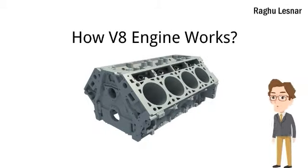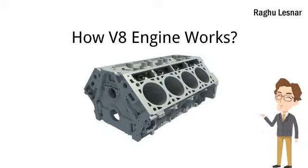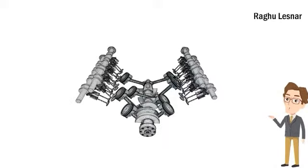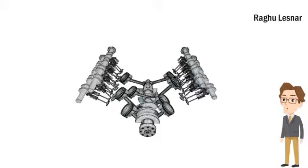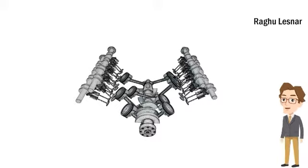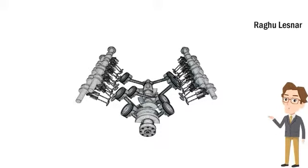Hey, hello friends, welcome to my channel. Now let's see about V8 engines. V8 engines basically have eight cylinders in a V configuration that are mounted on a single crankcase. Obviously, eight cylinders use a common crankshaft. Most V8 engines use a 90-degree angle, though sometimes other angles are used.